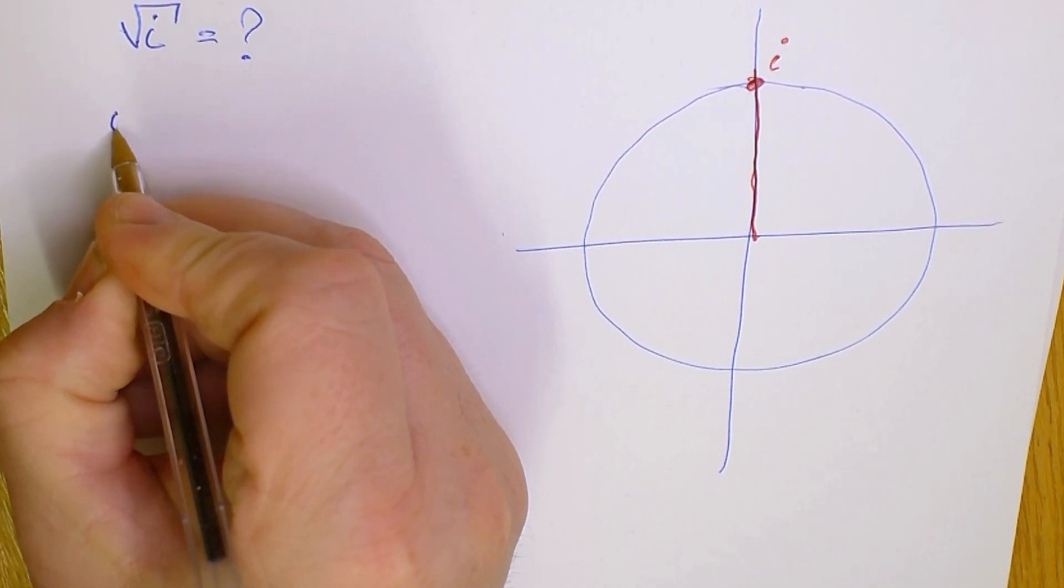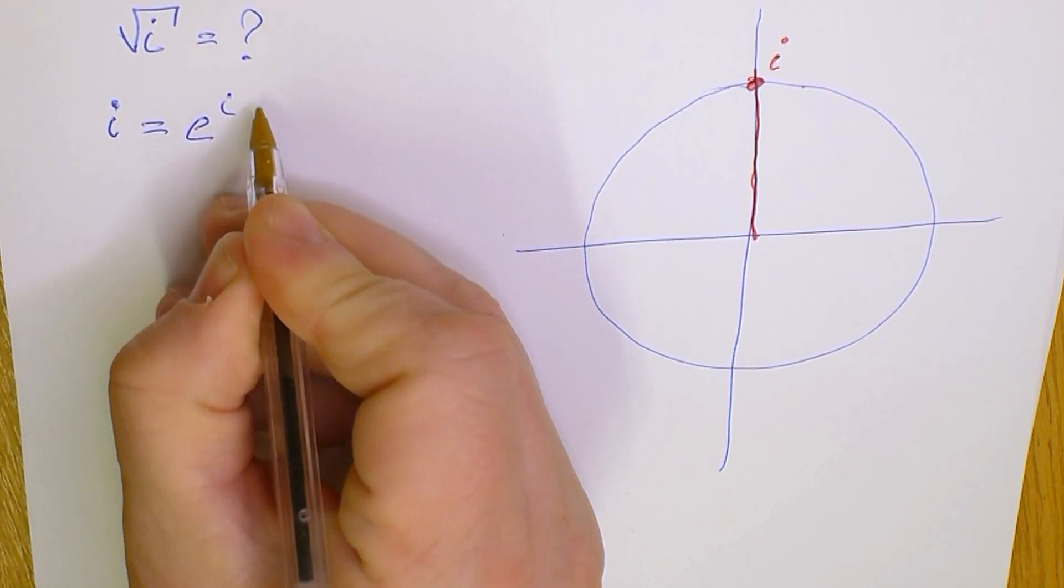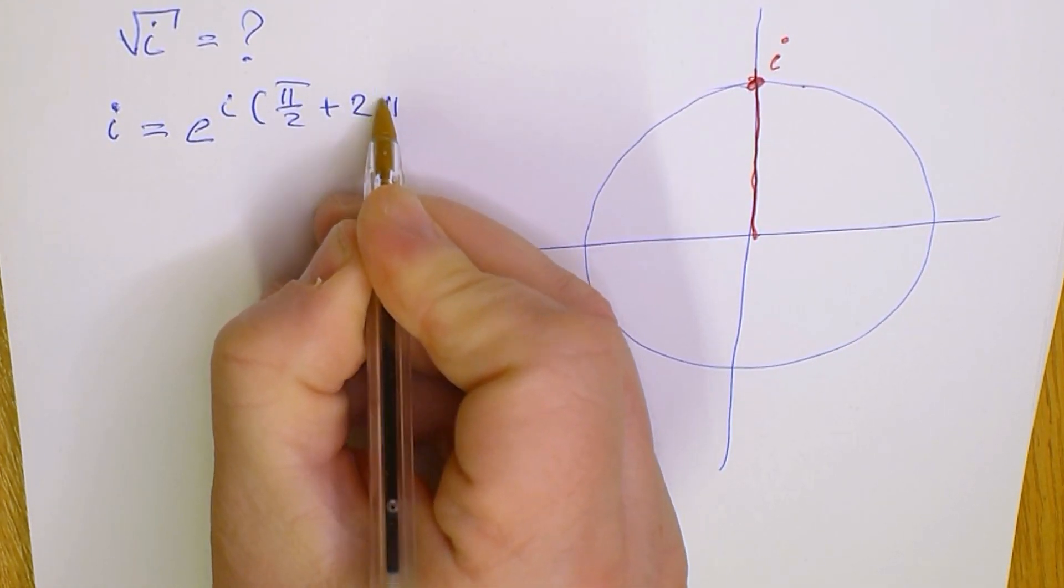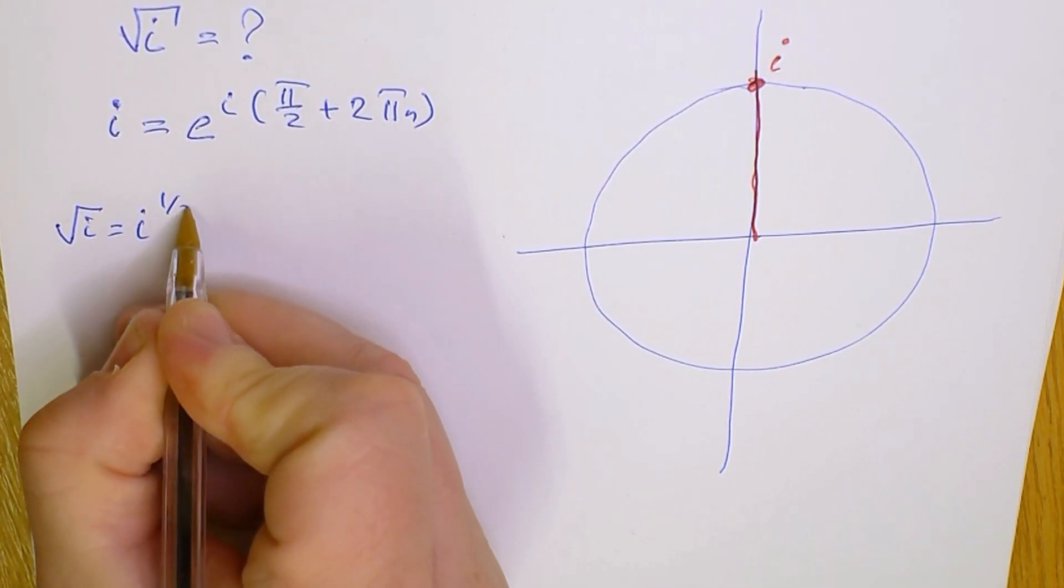We can write that i equals e to the power of i times pi over 2 plus 2 pi n. When we know this, we can calculate further.